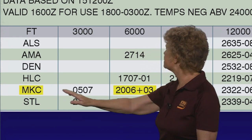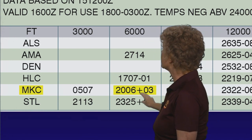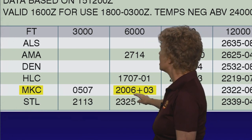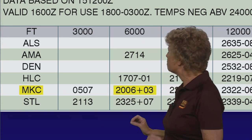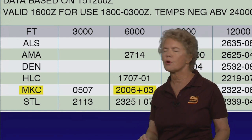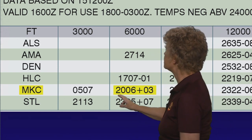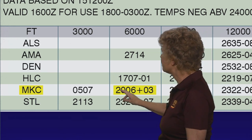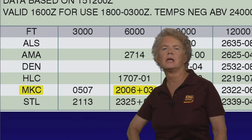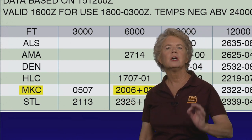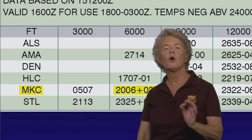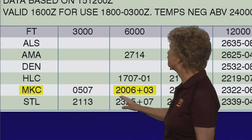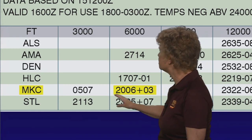So here's Kansas City, and here's 6,000 feet — this is the group of digits. In the winds and temperatures aloft forecasts, the first two digits are the wind direction. So the wind is from 20, and you add a zero to it: 2-0-0, or 200 degrees, and that's relative to true north.